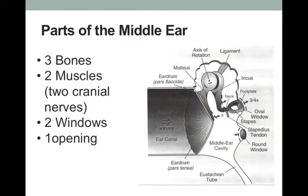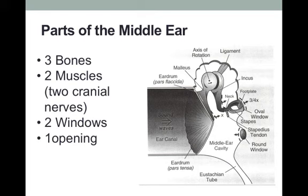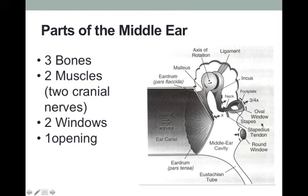To summarize, in the middle ear we have three bones — the three ossicles — and two muscles, the tensor tympani and the stapedius, each innervated by one cranial nerve. The tensor tympani is innervated by the trigeminal, the fifth cranial nerve, while the stapedius is innervated by the seventh, the facial nerve. We have two windows: the oval window and the round window. The stapes footplate is attached to the oval window, while the round window's purpose is to dissipate the pressure created when the stapes moves in and out of the bony inner ear compartment.